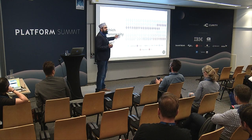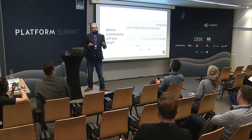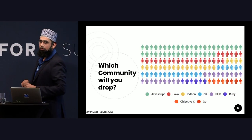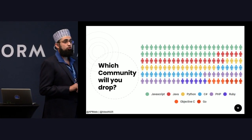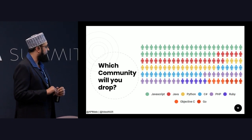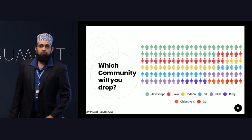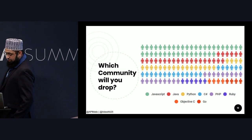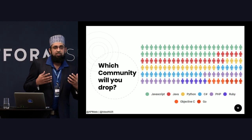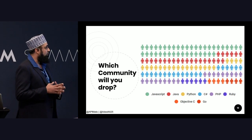If you distribute all 50 million developers among developer communities, you can get this distribution. As an API owner, it will be your choice which community you are going to drop if you don't have expertise in that language — if you're unable to speak the language of that community. Imagine you are happy to drop PHP — just remove all the purple guys from here. This makes speaking the language of developers quite important.